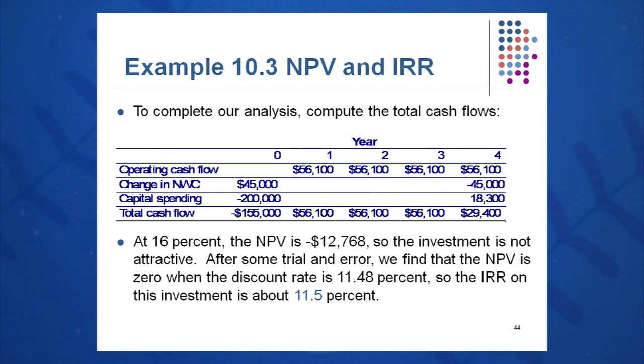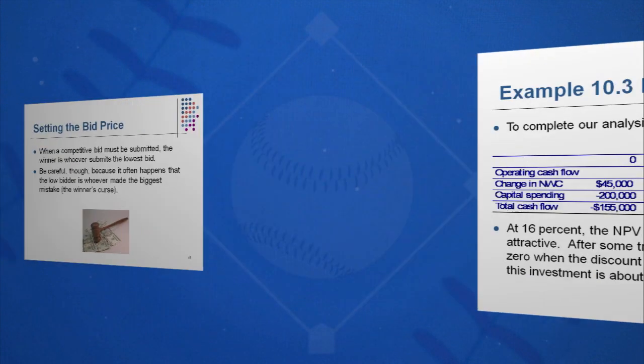After some trial and error, the IRR is about 11.5%, which is nowhere near the company's hurdle rate of 16%, so the CFO will reject this investment.